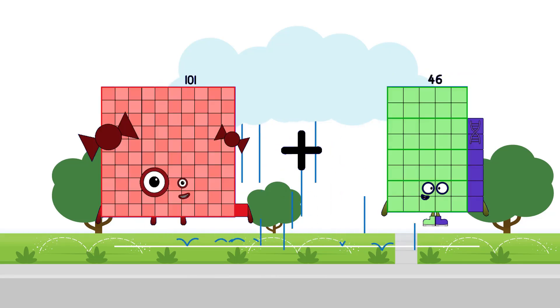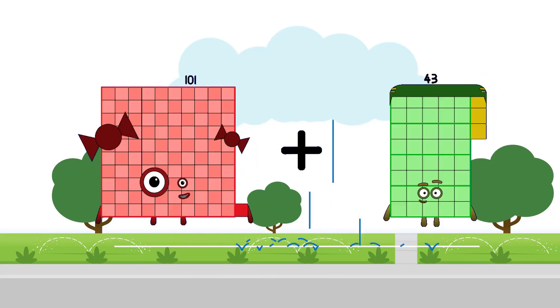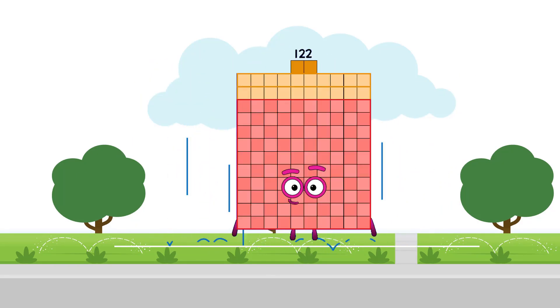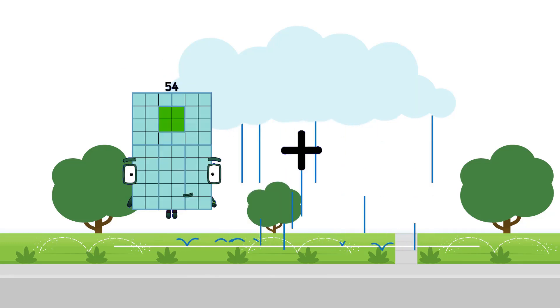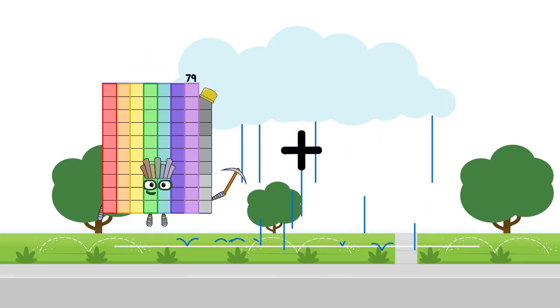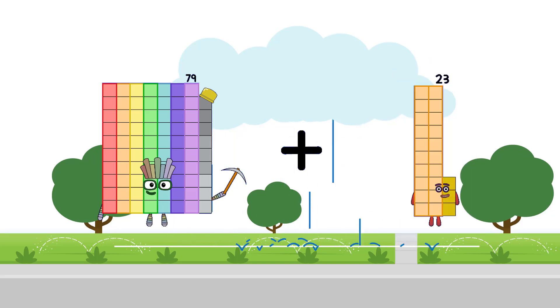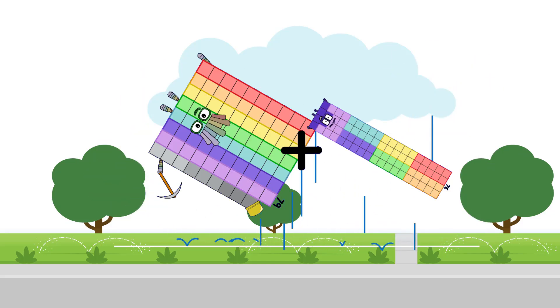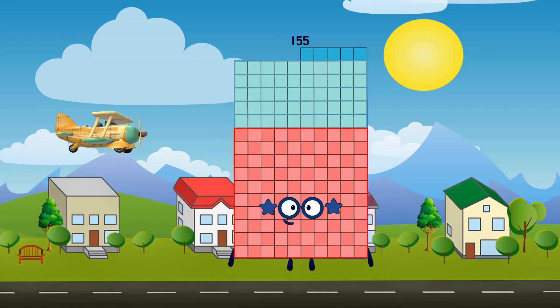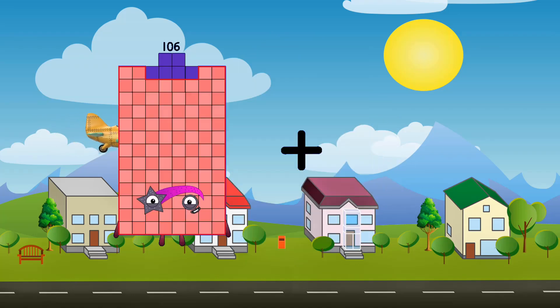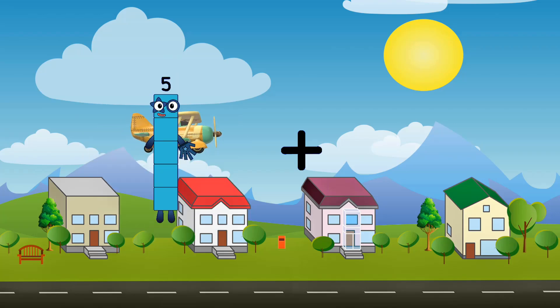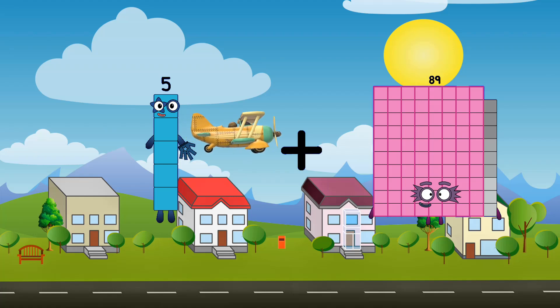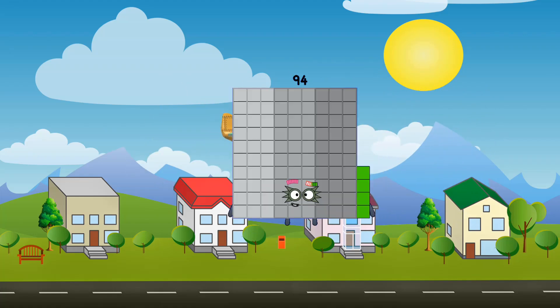One hundred one plus twenty-one equals one hundred twenty-two. Seventy-nine plus seventy-six equals one hundred fifty-five. Five plus eighty-nine equals ninety-four.